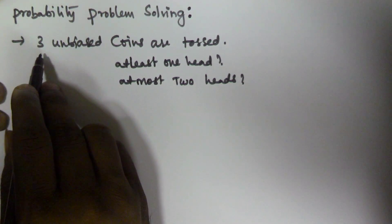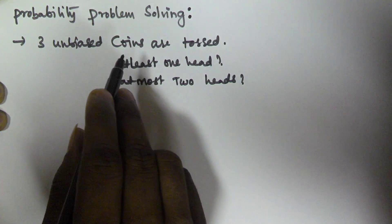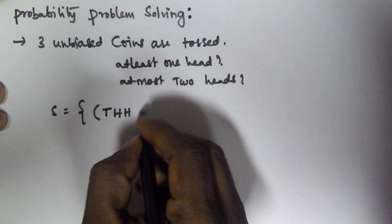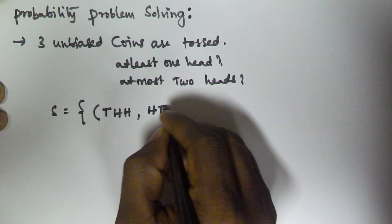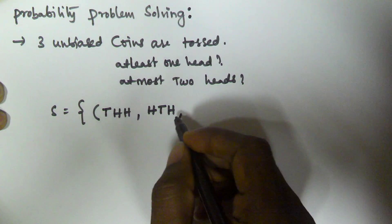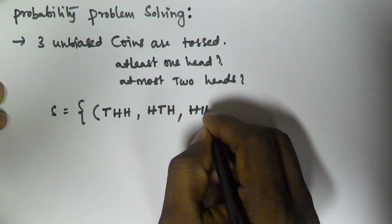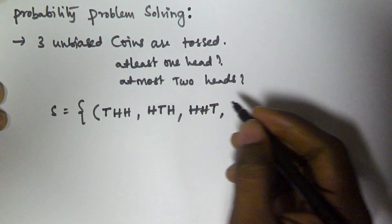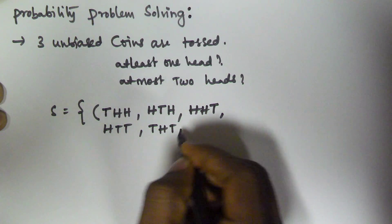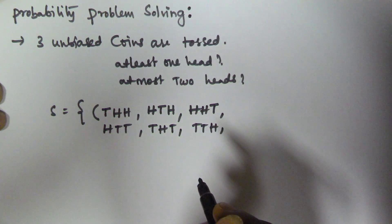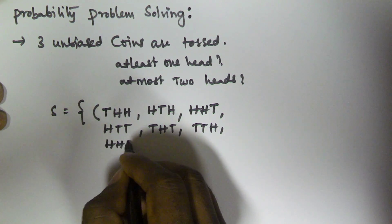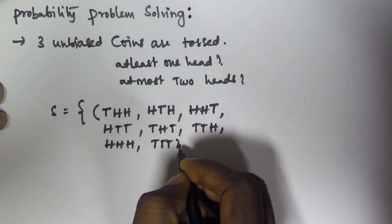Whenever we toss three unbiased coins, the sample space is going to contain: TTT, TTH, THT, THH, HTT, HTH, HHT, and HHH. So otherwise it is going to be three heads, or three tails.